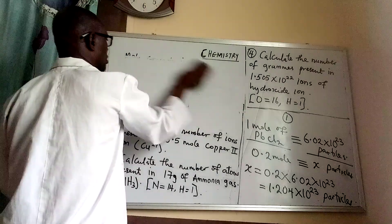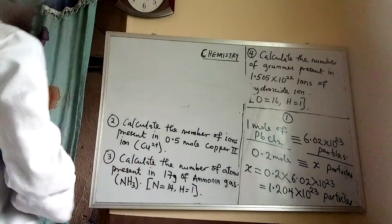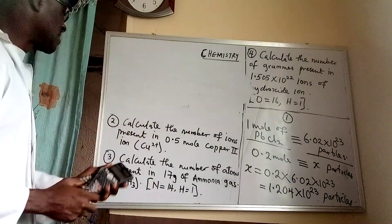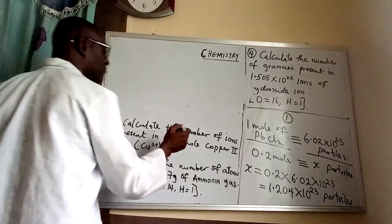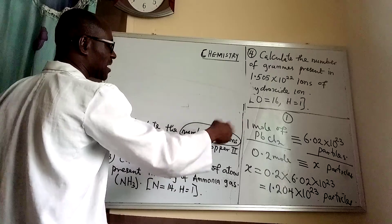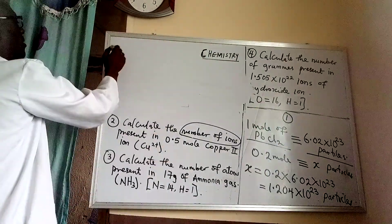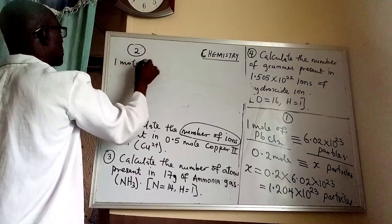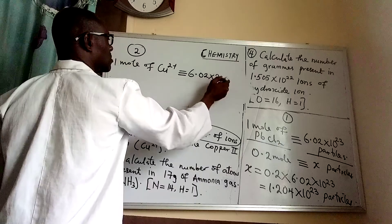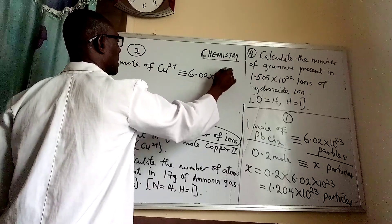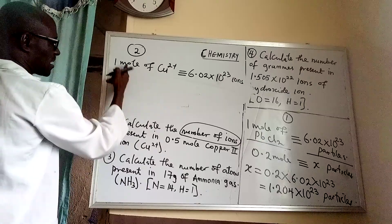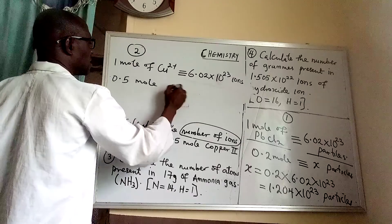Let's move on to question 2. Question 2 says: calculate the number of ions present in 0.5 mole of copper 2 ion. Since we are finding the number of ions, the Avogadro's constant number will be 6.02 times 10 to the power of 23 ions to 1 mole. 1 mole of copper 2 ion is equivalent to 6.02 times 10 raised to the power of 23 ions. We are given 0.5 mole, which is obviously less than 1 mole.